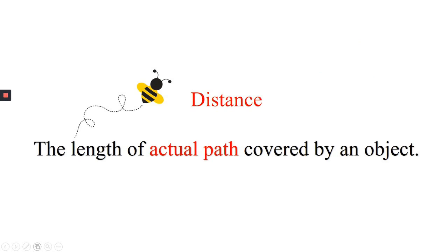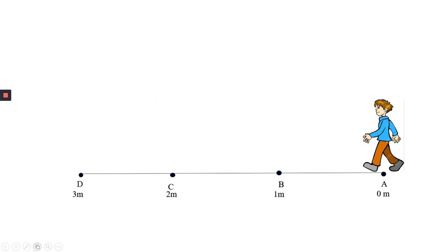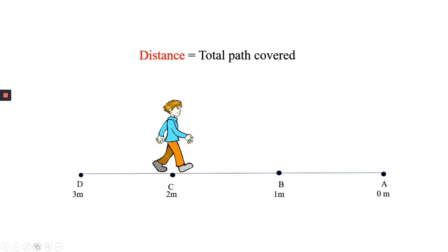Distance is the length of actual path covered by an object. In the example, a boy moves from A to D, 3 meters, and from D to C, 1 meter. Distance covered by the boy is equal to total path covered, which is equal to 3 plus 1 equals 4 meters.